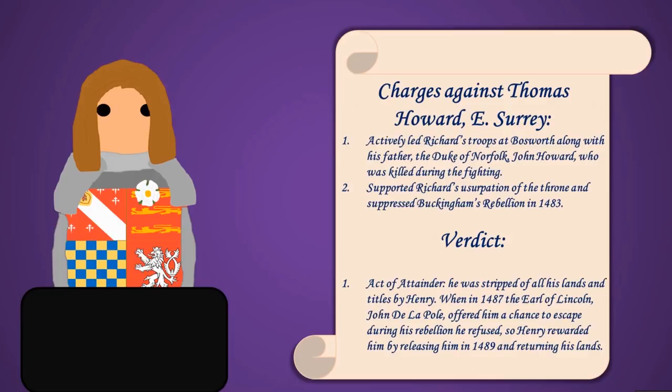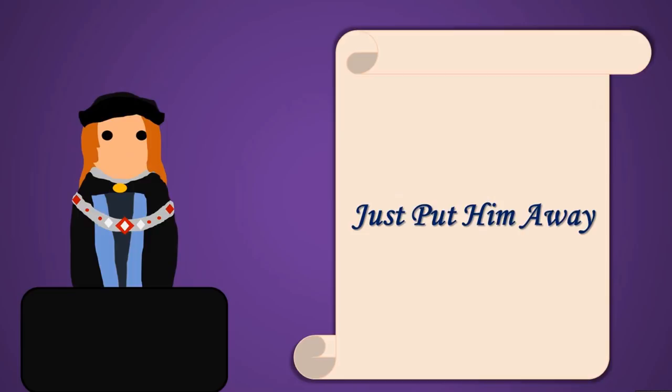Finally there was the Earl of Warwick, who was ten years old and was the nephew of Richard III — also a very strong claimant to the throne. He was simply imprisoned in the Tower, because that was something Henry didn't want to deal with directly.